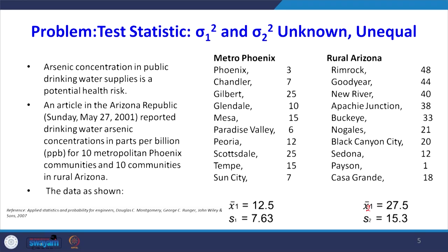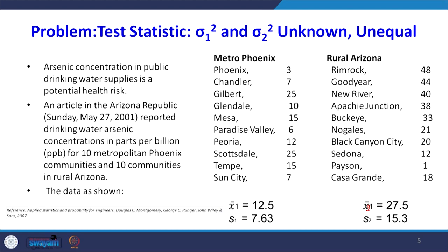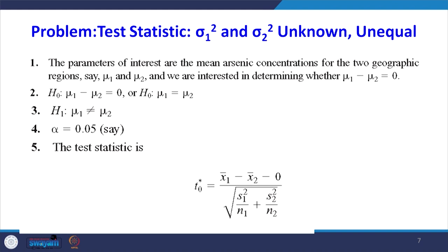We will take one sample problem and solve it. The problem is: arsenic concentration in public drinking water supplies is a potential health risk. An article in the Arizona Republic, Sunday May 27, 2001, reported drinking water arsenic concentrations in parts per billion (ppb) for 10 metropolitan Phoenix communities and 10 communities in rural Arizona. From the data, X1 bar is 12.5, S1 is 7.63, X2 bar is 27.5, and S2 is 15.3. We wish to determine if there is any difference in mean arsenic concentration between metropolitan Phoenix communities and communities in rural Arizona.